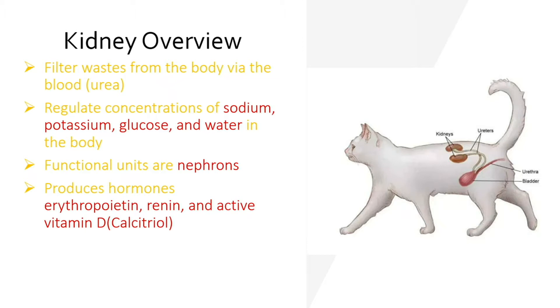The functional units are known as nephrons. Again, we went over this yesterday a little bit. And the kidney produces hormones such as erythropoietin, renin, and active vitamin D.